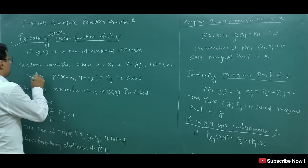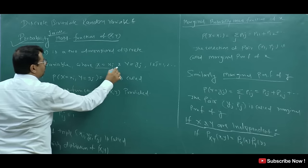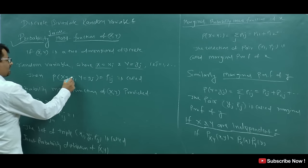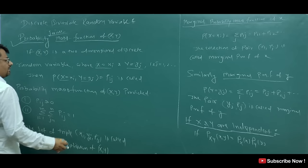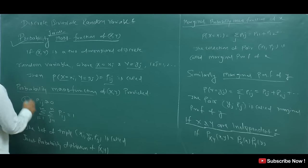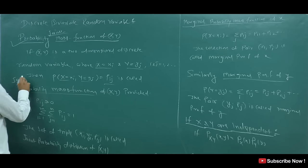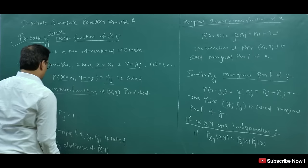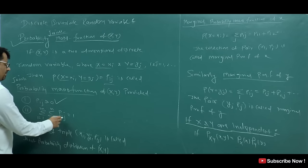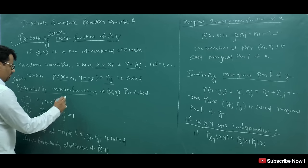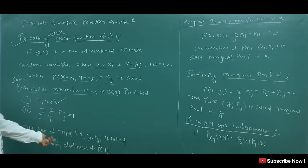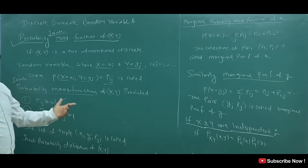If (X, Y) is a two-dimensional discrete random variable where X equals Xi and Y equals Yj, then P(X = Xi, Y = Yj) = Pij is called the probability mass function, or joint probability mass function of (X, Y), provided all probabilities Pij are greater than or equal to 0, and the double summation of Pij equals 1. The set of triplets is called the joint probability distribution of (X, Y).